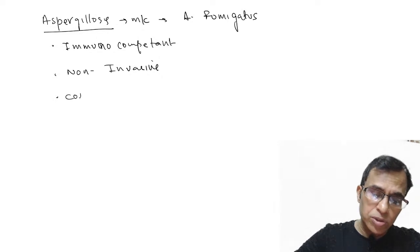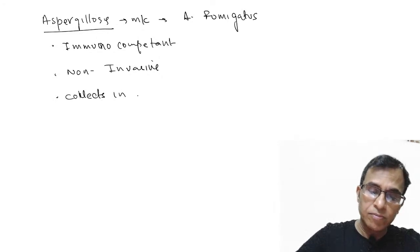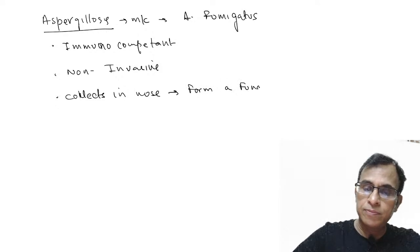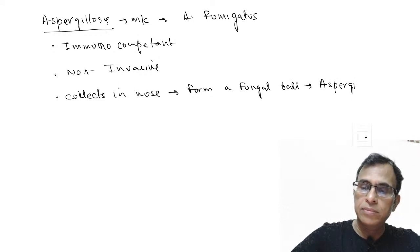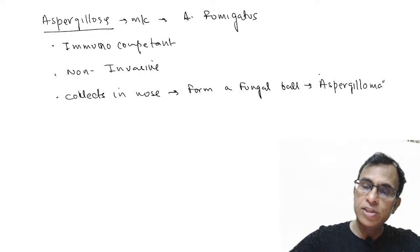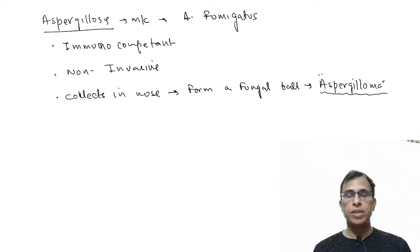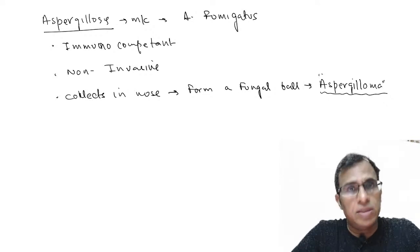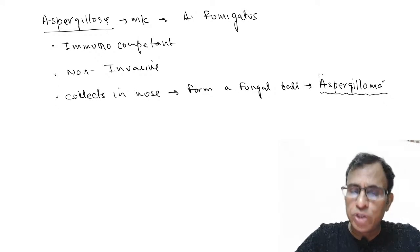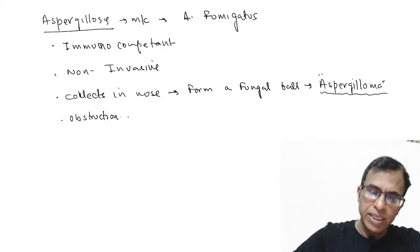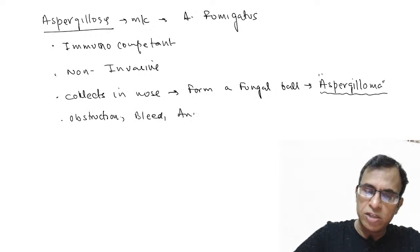Because it is non-invasive, the fungus collects in the nose to form a fungal ball called an aspergilloma. It acts like a foreign body in the nasal cavity made up of compiled fungus. This will cause nasal obstruction, bleeding from the nose, anosmia — loss of sense of smell — pain, and occasionally discharge from the nasal cavity.